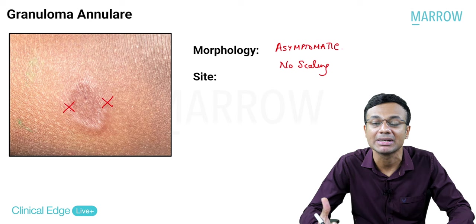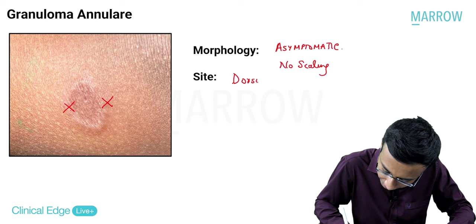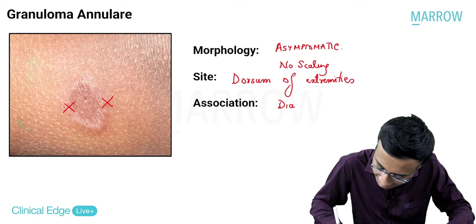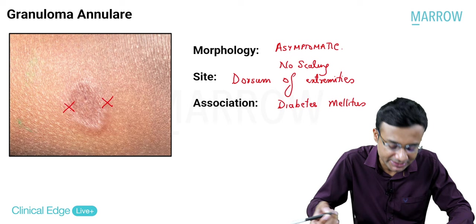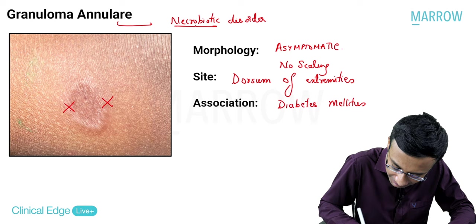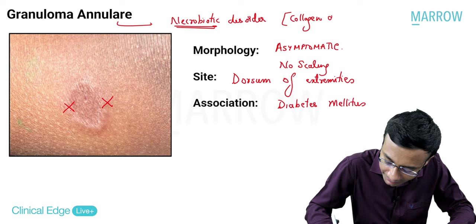The site of distribution for granuloma annulare is generally on the dorsum of the extremities. It is associated with diabetes mellitus. Additionally, granuloma annulare is classified as a necrobiotic disorder. Necrobiosis means collagen degeneration.